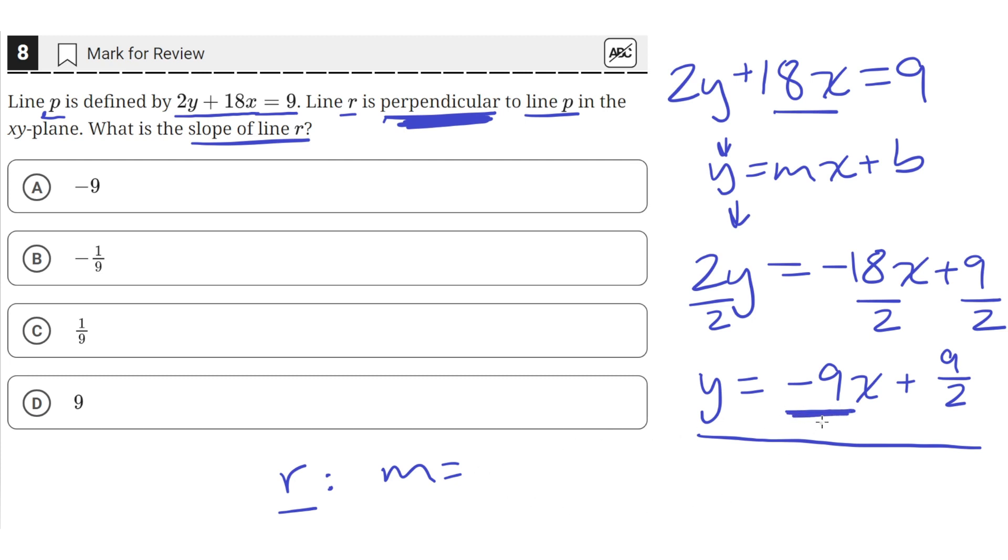So the negative reciprocal of negative 9 is just 1 ninth. So 1 ninth is the slope of line R. So C is the correct answer.